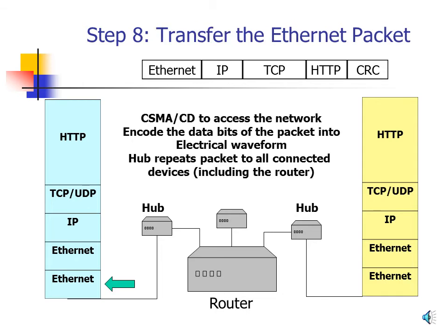Step 8: Transferring the Ethernet Packet. Once the entire packet has been built, the Ethernet network interface card puts it on the wire. The media access method for Ethernet is CSMA/CD (Carrier Sense Multiple Access with Collision Detection). Once access to the wire is obtained, the bits — the actual zeros and ones of the packet — are converted into an electrical waveform using Manchester encoding. The packet travels to the hub, which forwards it to everything connected to it, sending the packet on to the router.